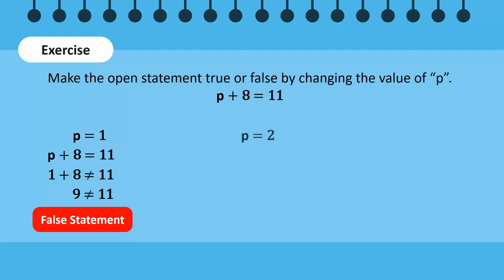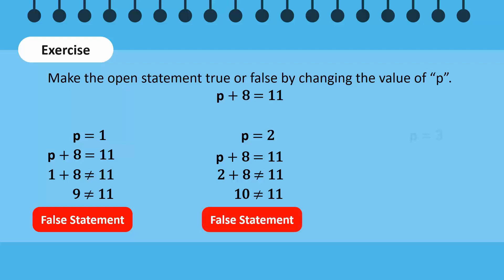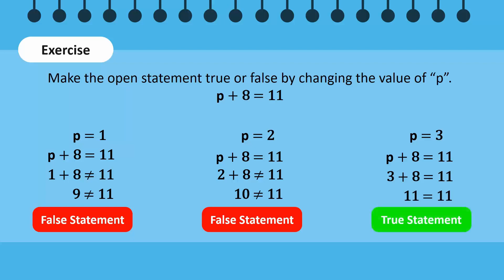Let's replace p with 2: 2 plus 8 is equal to 11. The left-hand side adds up to 10, while the right-hand side is 11. Again, this is a false statement. When we replace p by 3, the equation becomes 3 plus 8 equals 11. Adding 3 and 8 gives us 11 on the left-hand side, which is equal to 11 on the right-hand side. Therefore this is true. So the value of p is 3 to form a true statement, while all other values form false statements.